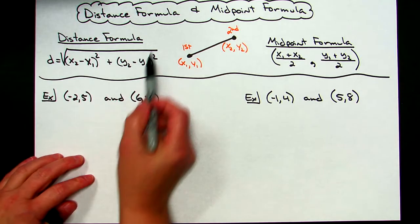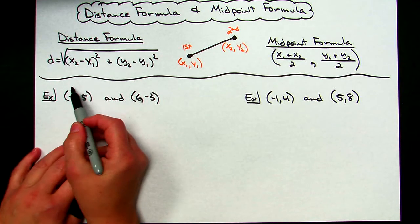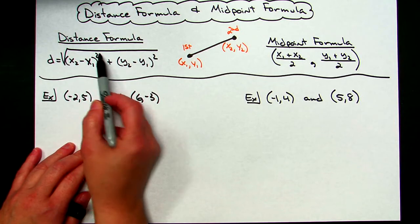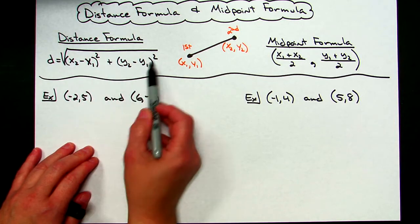So over here for the distance formula, the distance formula is arrived at by taking the square root of the difference of the x's squared plus the difference of the y's squared.